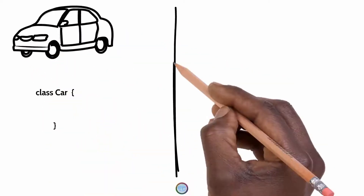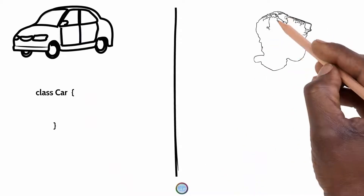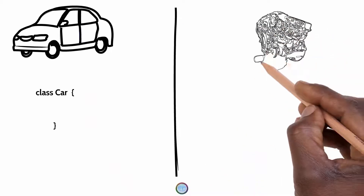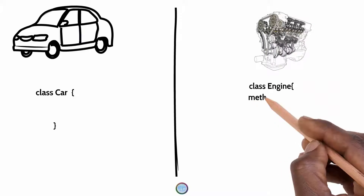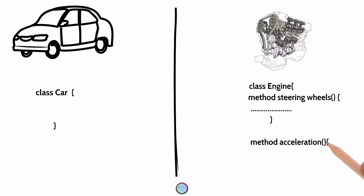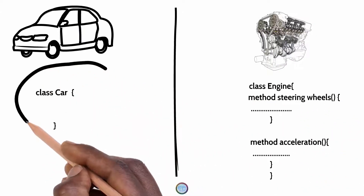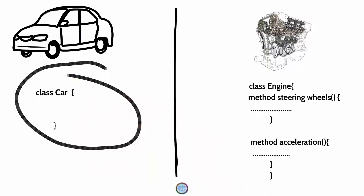As you can see in the picture, there are two classes — one by the name of Car and another class by the name of Engine. The Car class is basically an empty class as it does not consist of any methods, functions, variables, or data types. On the other hand, the Engine class consists of two methods: steering wheel and acceleration. These methods are defined inside the Engine class.